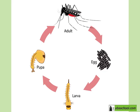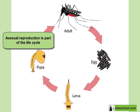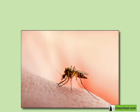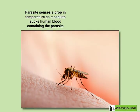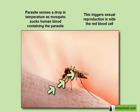Asexual reproduction is not an alternative if conditions are bad — it is actually part of the life cycle of the parasite. When the mosquito takes her blood meal and bites the human, the drop in temperature between the human body and the mosquito triggers sexual reproduction in some of the parasites inside the red blood cells.